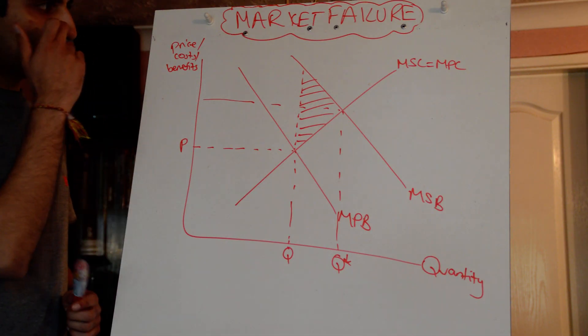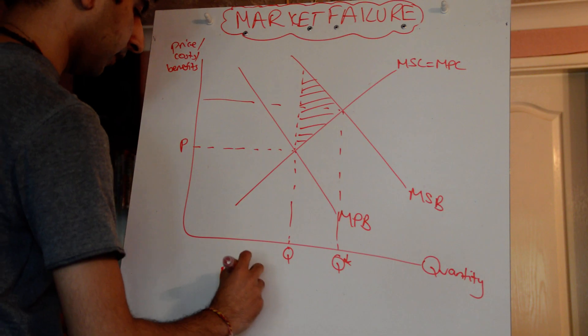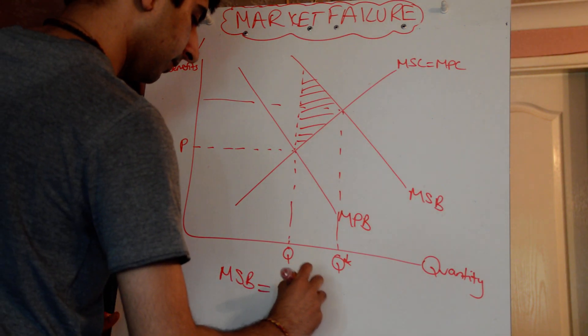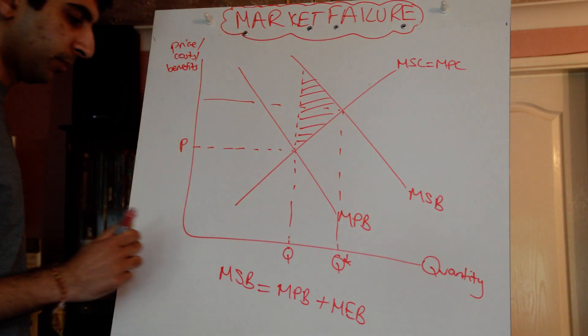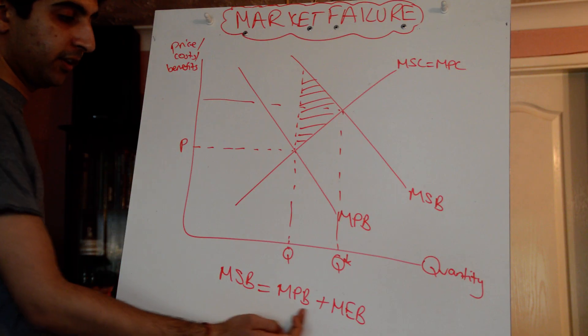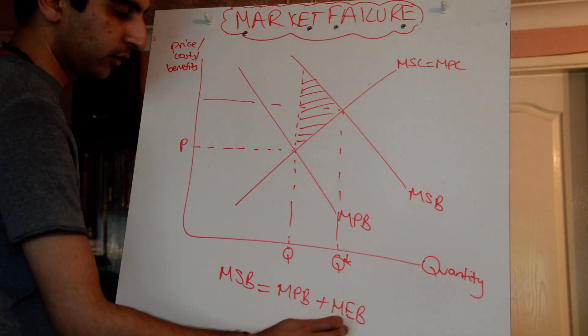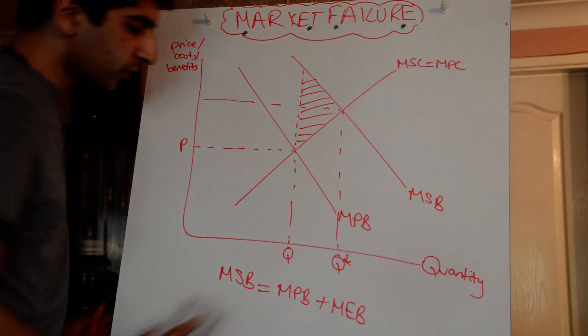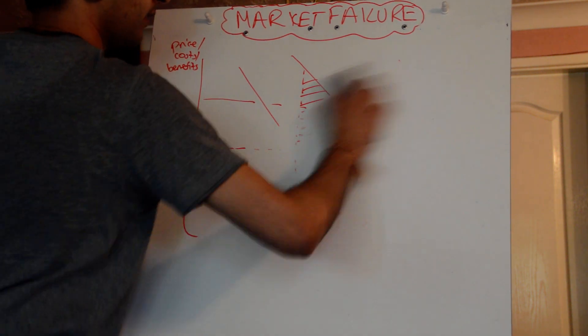So that's the welfare loss of the units we're not producing, considering we're at point Q. That's the problem with merit goods and positive externalities. If you want to know the equation for it, it's MSB equals MPB plus MEB. The marginal social benefit equals the marginal private benefit plus the marginal external benefit. That's the key thing, the external benefit that's not included in private benefits.